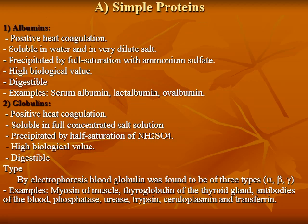Albumin is an example of a simple protein. It is positive for heat coagulation, soluble in water and very dilute salt, precipitated by full saturation with ammonium sulfate, and has high biological value. It is digestible. Examples include serum albumin, lactalbumin, and ovalbumin. Globulin is also positive for heat coagulation, soluble in full concentration salt solution, precipitated by half saturation of ammonium sulfate, and has high biological value and is digestible.